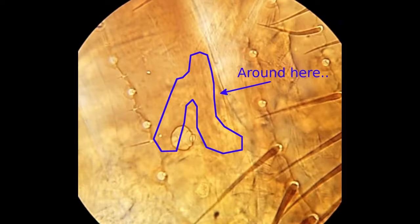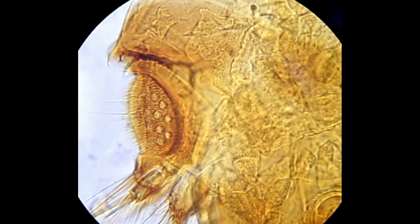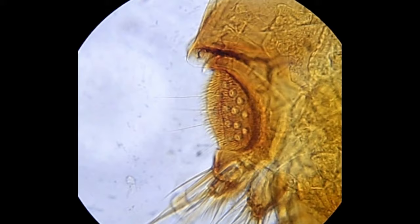Number 11, the pygidial plates. The most obvious structure on the abdomen is this part called the pygidium or the sensilium. It's another sensory organ which allows the flea to detect the movement of air around it, helping it to decide when a host is nearby.